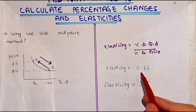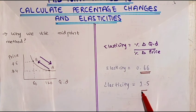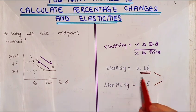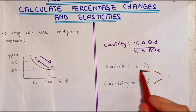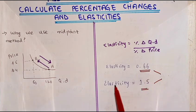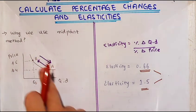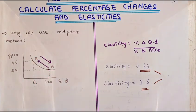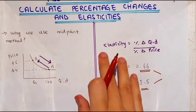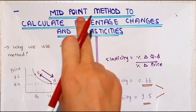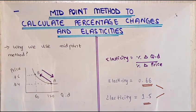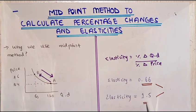Now we can see that there is a difference between these two answers. In the first condition, the elasticity is 0.66, and in the second condition it is 1.5. The difference in the answer depends on which direction we follow. But this problem can be solved by applying the midpoint method, and with this method we will not have different answers.